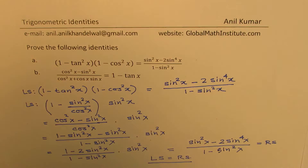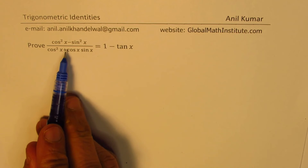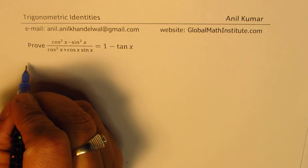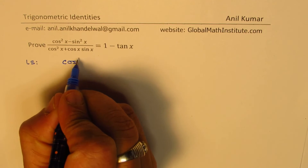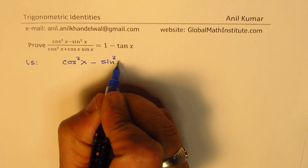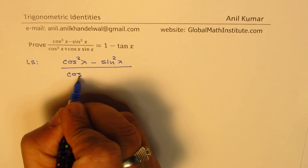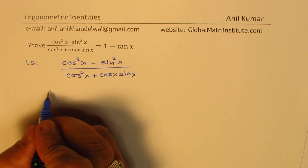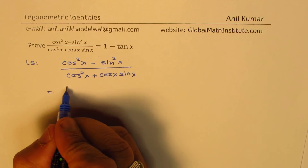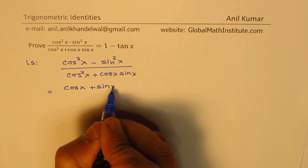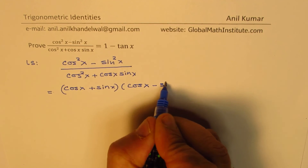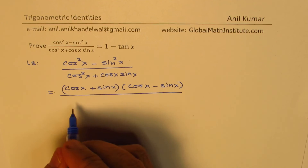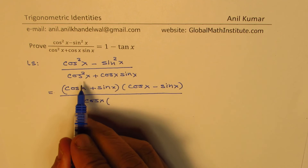Now let's take the second identity: cos squared x minus sin squared x, divided by cos squared x plus cos x sin x, equals 1 minus tan x. The left side is more complicated, so we begin with the left side. The numerator can be factored as a product of sum and difference, so we write it as cos x plus sin x times cos x minus sin x.